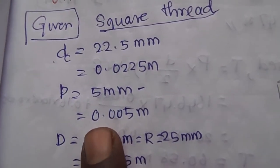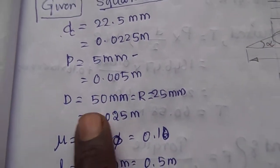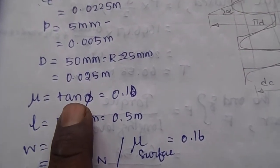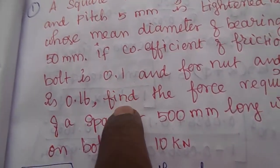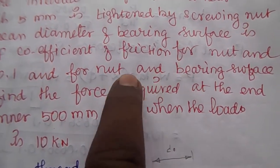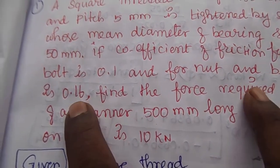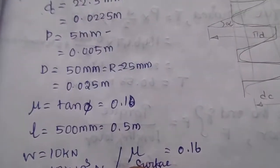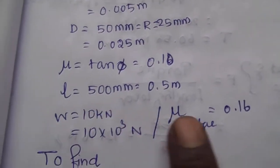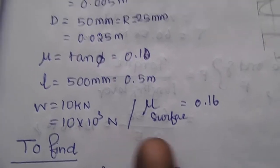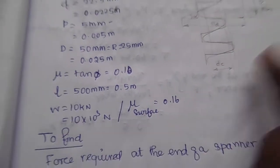The core diameter is the intermediate diameter, and the outer diameter is the largest. The core diameter is 22.5 mm. The radius of the bearing surface is 25 mm. Mu for the bolt is 0.1, and the mean diameter of the screw will be calculated. The length of the spanner is 500 mm, that is 0.5 m. The load is 10 kN. The coefficient of friction for the bearing surface is 0.16.